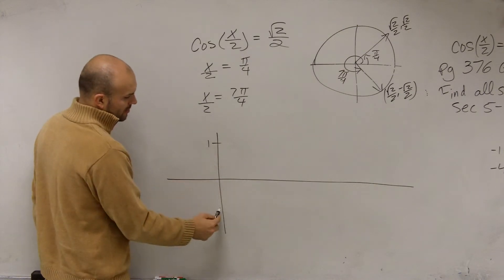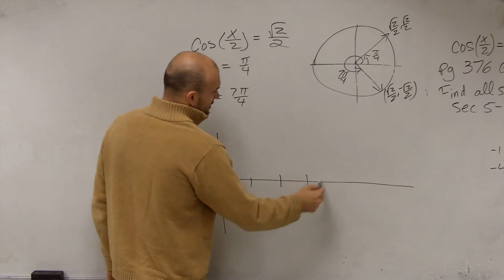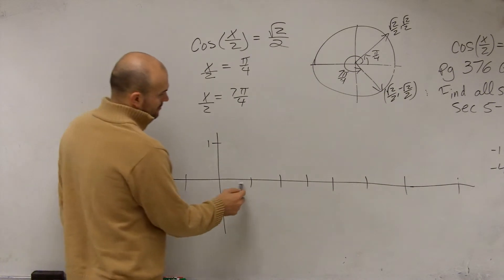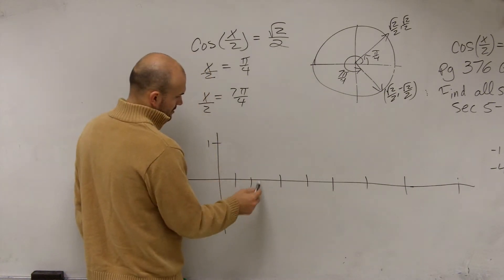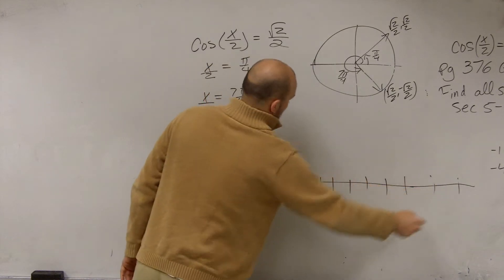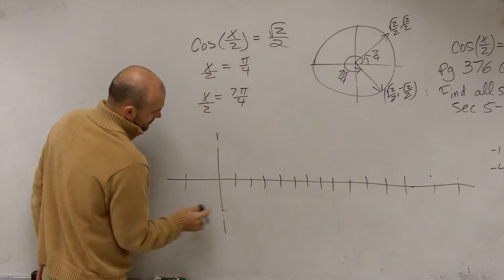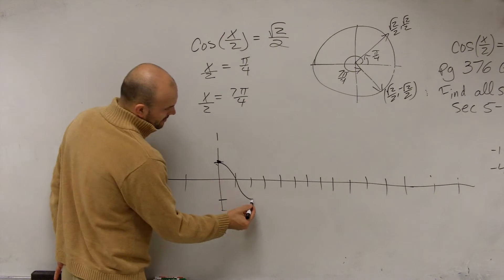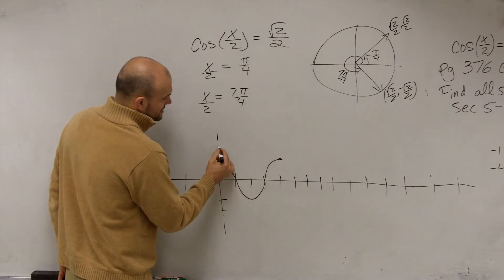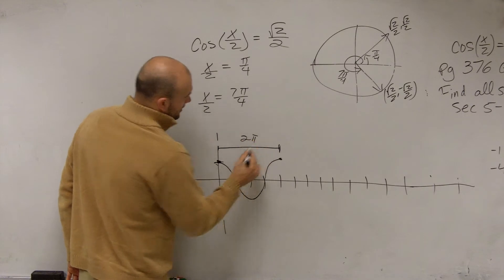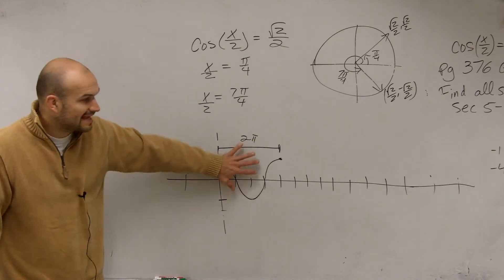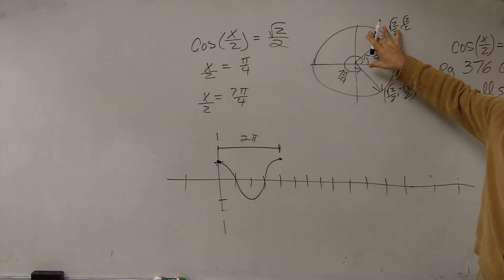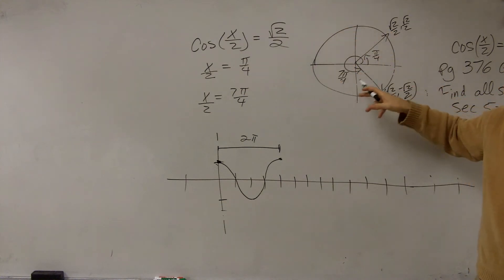So if I was going to draw the cosine graph, we know it goes up to 1, down to negative 1. The cosine graph starts at 1, comes down to a minimum, then comes back up. The distance from here to here — one full period — is 2 pi. We learned how to graph it like this by using the points on the unit circle, because this is an interval of angles between 0 and 2 pi.